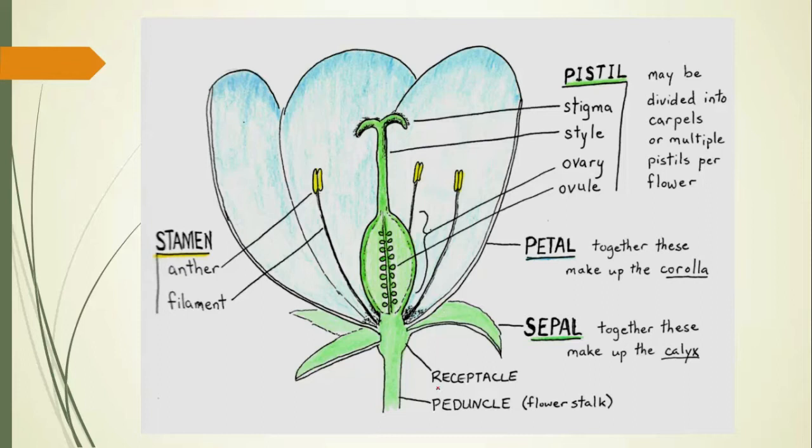Lastly, what does all this sit on top of? Well, you have the receptacle, where all those parts hang off of. And then all that comes off the flowering stalk, or the peduncle. And that's the basics of flower anatomy.